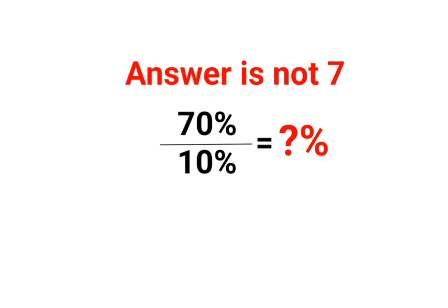Today we're going to understand this percentage problem: 70% divided by 10%. We need to find out what 70% divided by 10% equals. Now, a lot of people thought the answer is 7, but actually that's wrong.